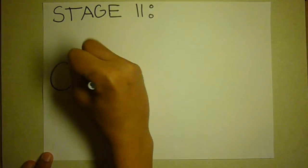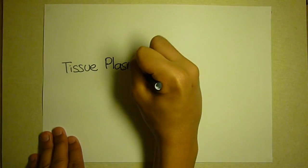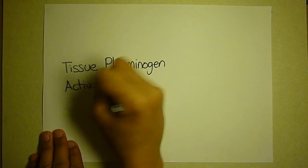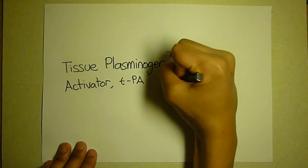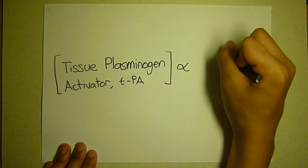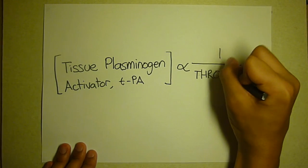Stage 2: coagulation. The endothelial cells release another protector chemical, called tissue plasminogen activator, or TPA, which is inversely proportional to the concentration of thrombin, a protein enzyme. As a result, when the tissue breaks, there are fewer endothelial cells, so there is a decrease in the concentration of TPA.